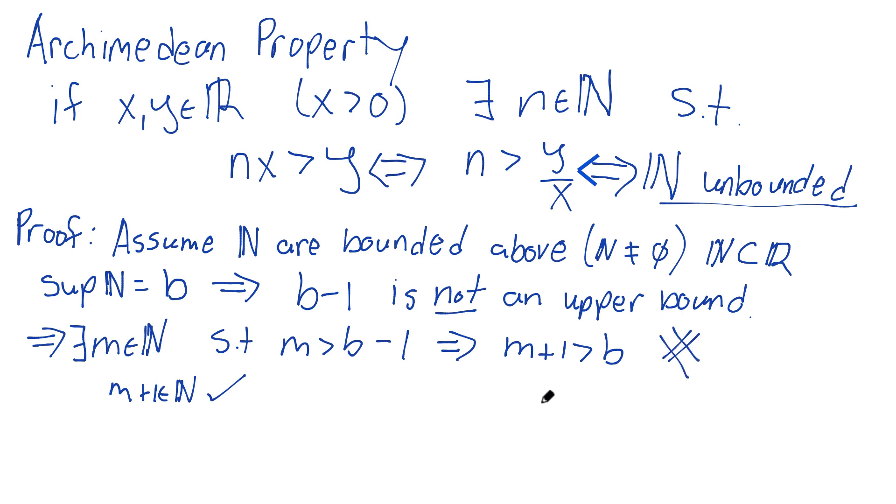So we have this contradiction, meaning that the natural numbers are in fact unbounded. They are not bounded above, which is totally equivalent to what we wanted to say with this Archimedean property. Now click the link on the screen to watch the next video in the course.